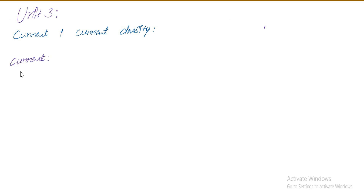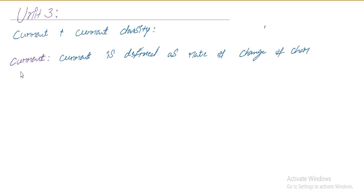What is current? Current is defined as rate of change of charge with respect to time. Current is indicated with capital I. I is equal to dq by dt. The units are amperes.